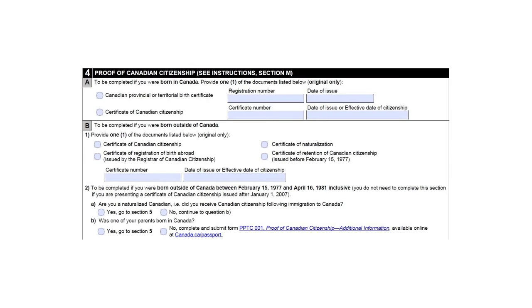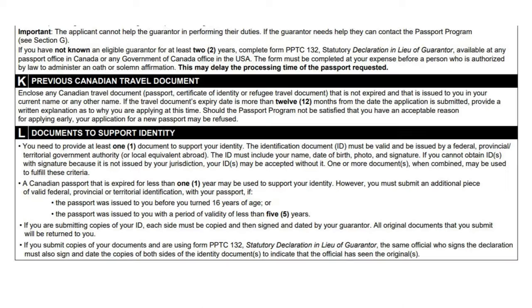Original proof of Canadian citizenship is also required and will be returned to you. If you were born in Canada, you can submit your birth certificate. If you were born outside Canada, you can provide any of the following: citizenship certificate, certificate of naturalization, certificate of birth registration of birth abroad, or certificate of retention of Canadian citizenship. One copy of your valid ID card will also be required.